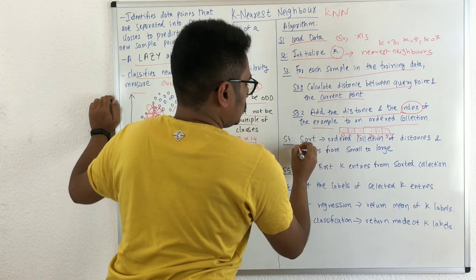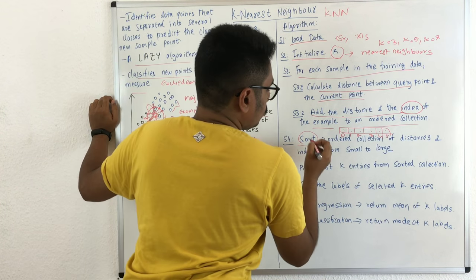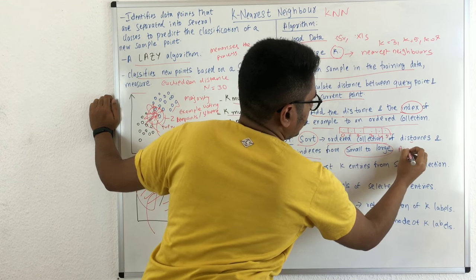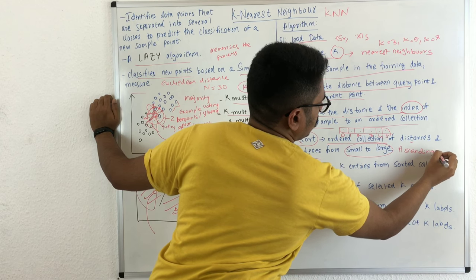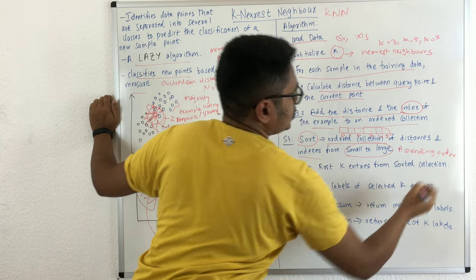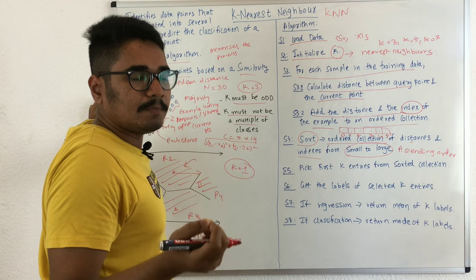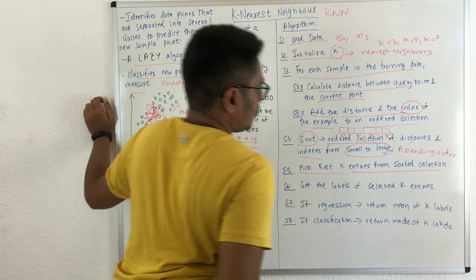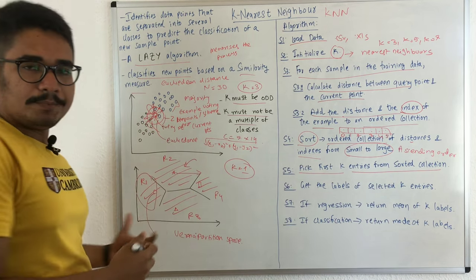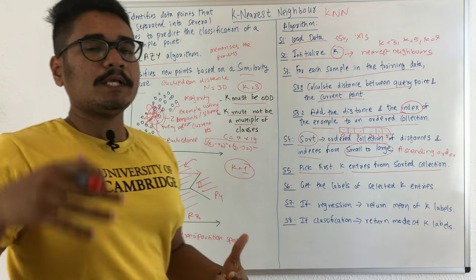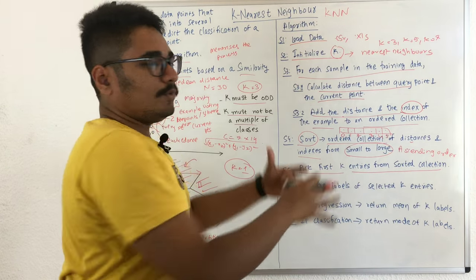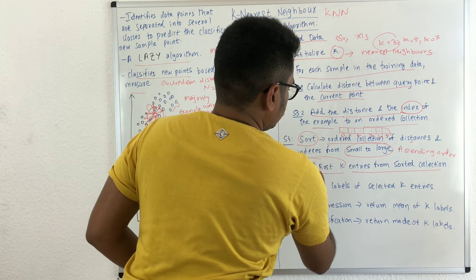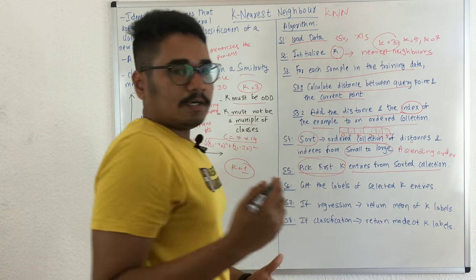Once you have this ordered collection, you need to sort it. Sort the ordered collection of distances and indexes from small to large — in ascending order — meaning which point has the minimum distance from the query point comes first. Then you pick the first k entries from the sorted collection. From all 30 points, you calculate all the Euclidean distances, store them, and with the specified k you pick the first k entries.